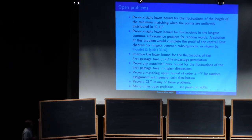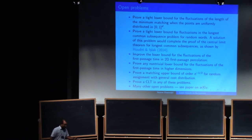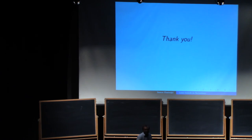In first passage percolation, you know, improve the lower bound in the fluctuations, or any non-trivial lower bound in three and higher dimensions. The matching upper bound for the random assignment, general cost distributions, prove a CLT in any of these problems, in the minimum matching, traveling salesman, you know, all the other things that I talked about. It's all open. And there are many others in this paper. Okay. Thank you.